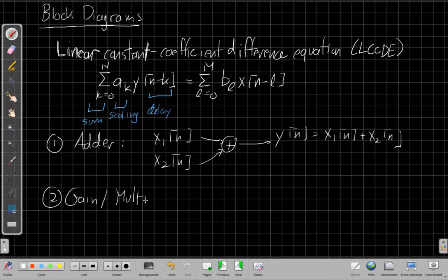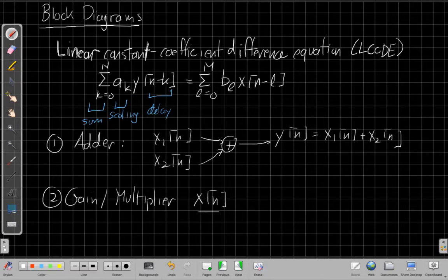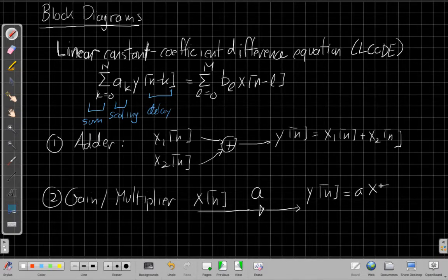The second thing we need is a gain or a multiplier. And that's to implement the scaling, which says I need a block that I put X of N in. And we usually just draw this with an arrow with the gain next to it, just because there are a lot of them. So we want to make it something we can draw quickly and efficiently. So if I have a branch that looks like this, it says the output at the end of that branch is A times the input.